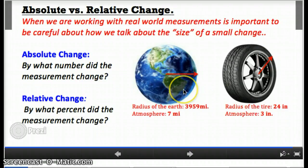Let's suppose the radius of the earth is 3,959 miles, and the atmosphere is seven miles out from that radius. So it's seven additional miles, which gives you a total radius, a new radius, of 3,966 miles.